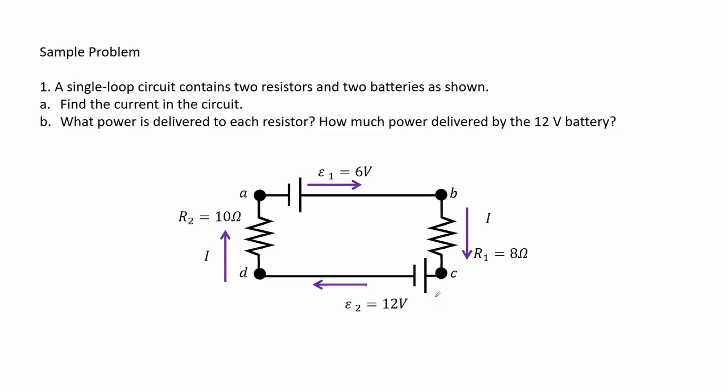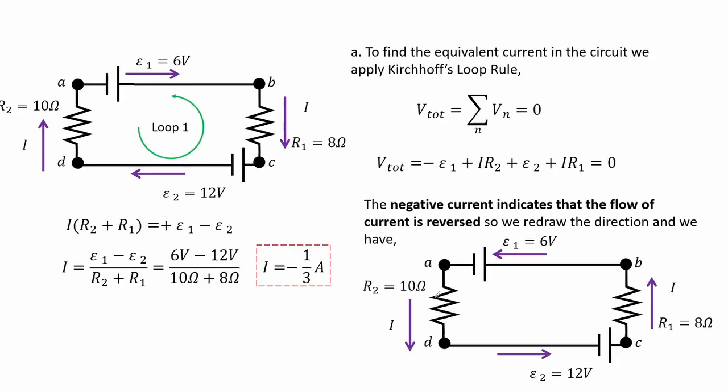Refer to the figure here. For letter A, we find the equivalent current in the circuit. We apply Kirchhoff's loop rule as shown in the equation here.